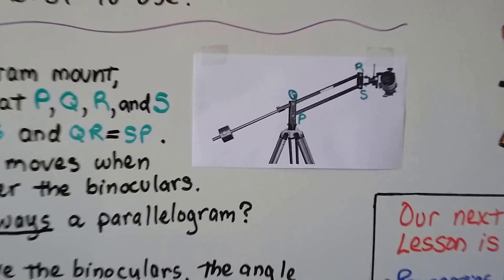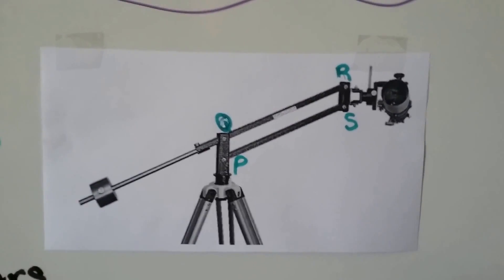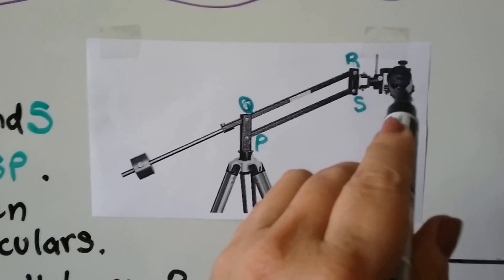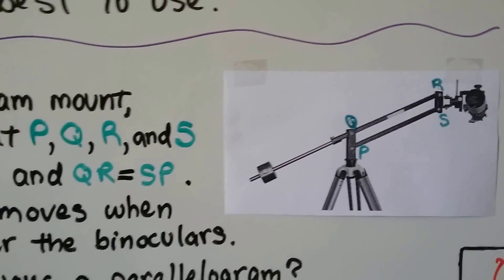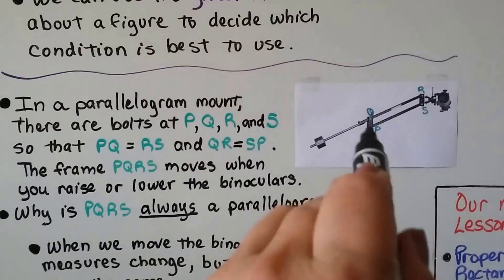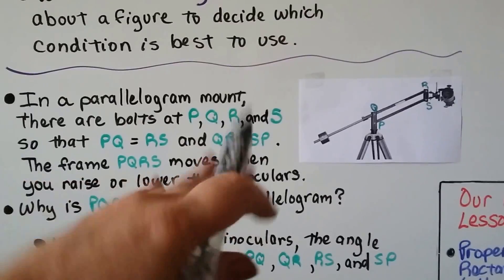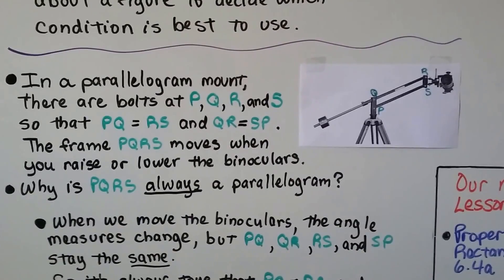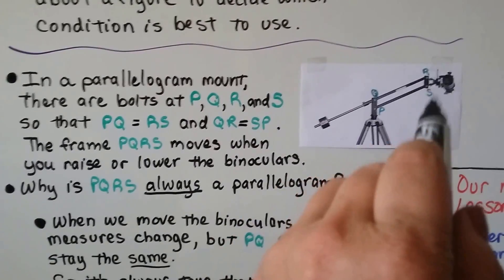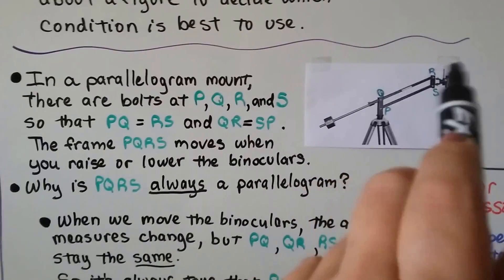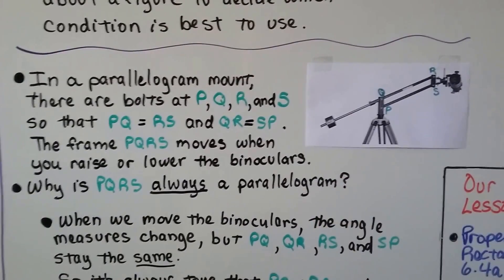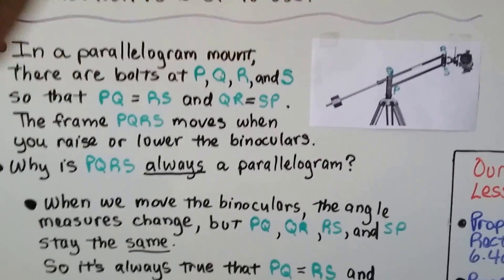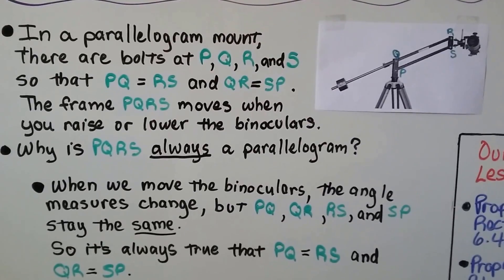And take a look at this diagram. See this? It holds a monocular or binoculars. So binoculars, that has the two lenses, one for each eye. A monocular has just one, like a telescope. So in a parallelogram mount, that's what this is, and it's got bolts here, and it can move. There's bolts at P, Q, R, and S. So that PQ is equal to RS, they're the same length, and QR is equal to SP. These are the same length. In the frame, PQRS moves when you raise or lower the binoculars. So it's like the bolts are like hinges.